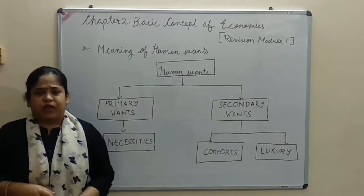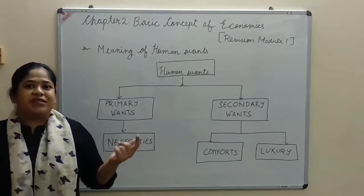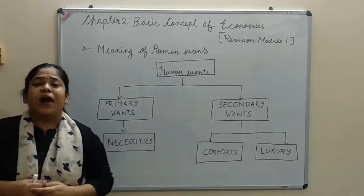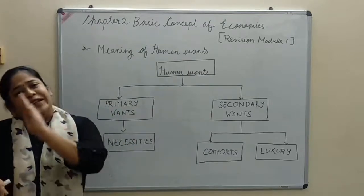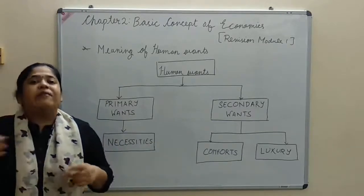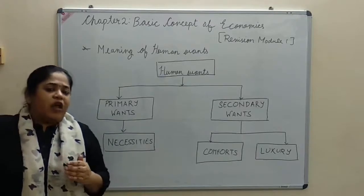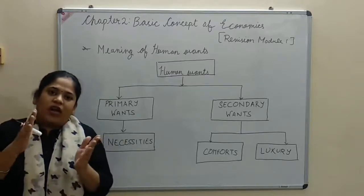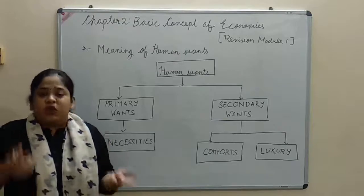Meaning of Human Wants. A want is an effective desire — a person has a desire to have a commodity. I may have a desire to buy a car, but if I am not earning, that will not become a want. Desire is simply a wish; it will become a want when I make an effort to have that car. So a want is an effective desire, and it is only valid when a person makes an effort to actually fulfill something.